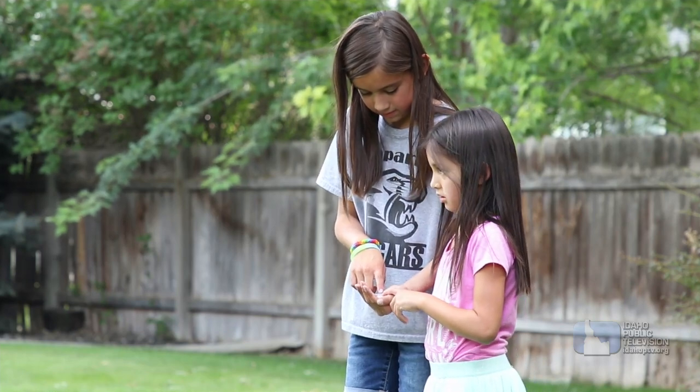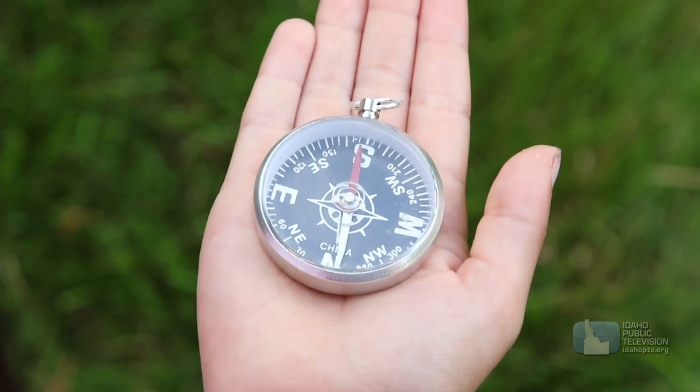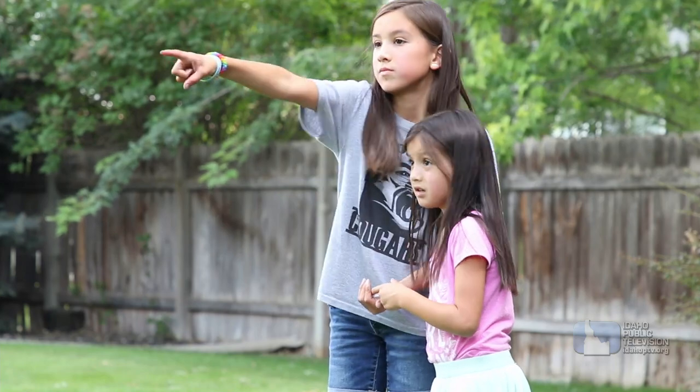Explorers have long used a tool called a compass. This device has a magnetic needle that always points north and south, so you can find your way around.